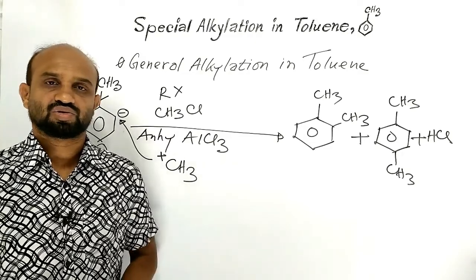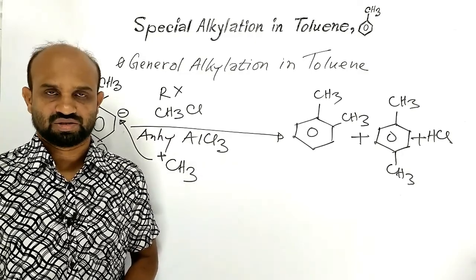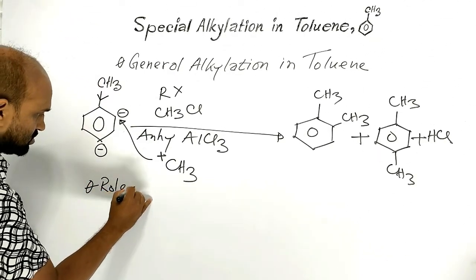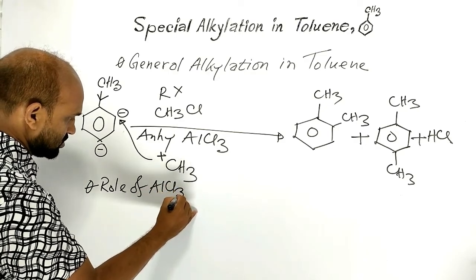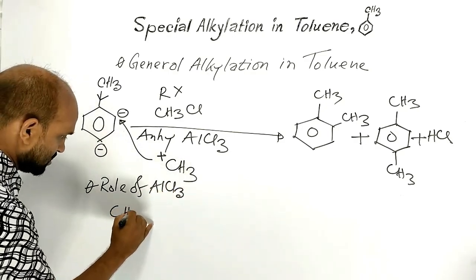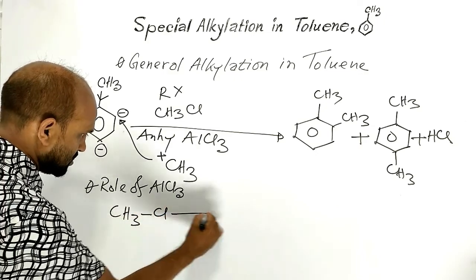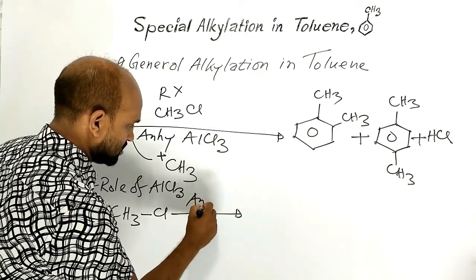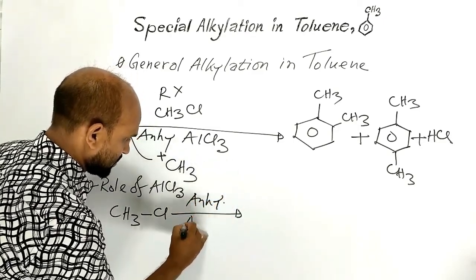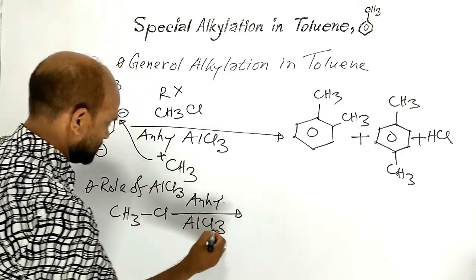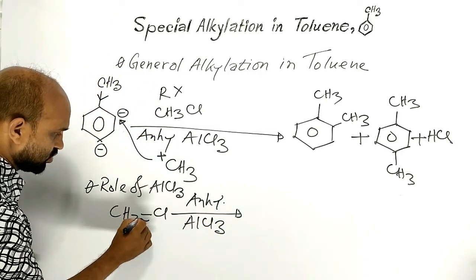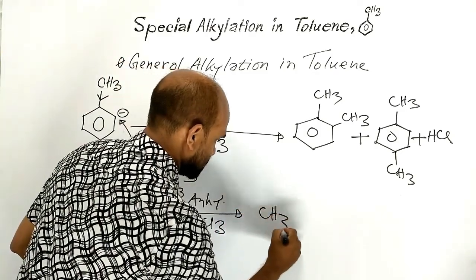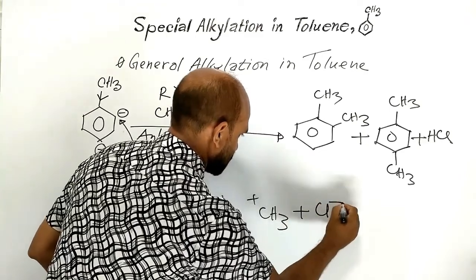Now let's see the role of aluminium chloride in this reaction. In the presence of anhydrous aluminum chloride, the C–Cl bond in methyl chloride undergoes heterolytic fission to form a methyl carbocation and a chloride ion.